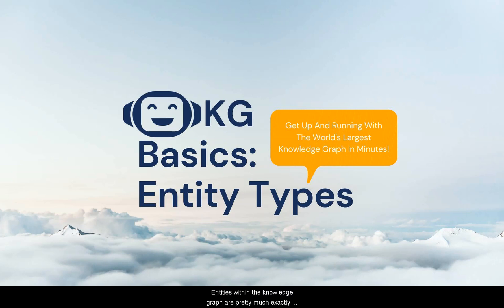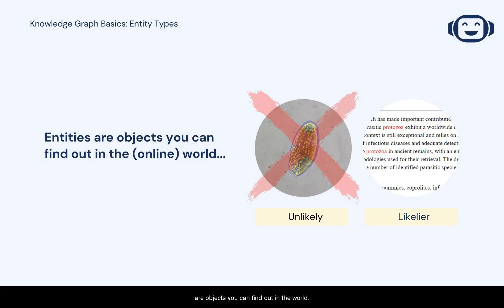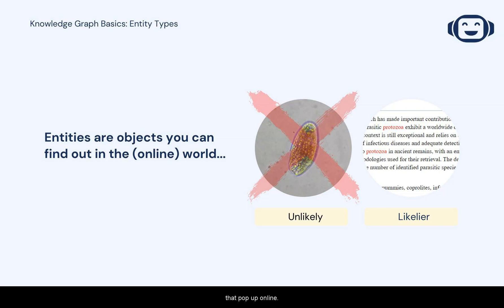Entities within the knowledge graph are pretty much exactly what they sound like. They're objects you can find out in the world. Because our knowledge graph is created by crawling the public internet, they tend to be objects that pop up online.